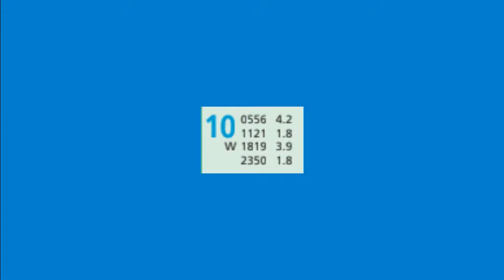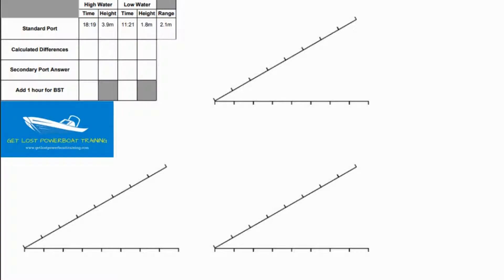Here's our standard port information then from the Almanac. This is the first bit of information we have and we're looking at the times of 1121 low water 1.8 metres and 1819 high water 3.9 metres. So we're going to enter those in that top row of our table. You'll notice that I've also entered 2.1 metres in the range box at the end. The range is the difference between high water and low water heights, so 3.9 metres minus 1.8 metres gives me a range of 2.1 metres and that's important when we're deciding whether we're on a spring tide or a neap tide.